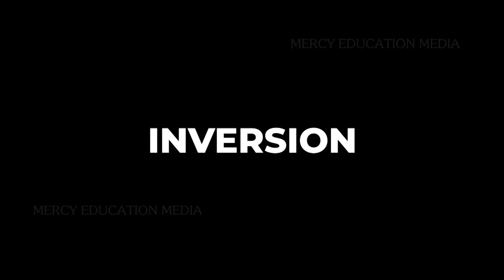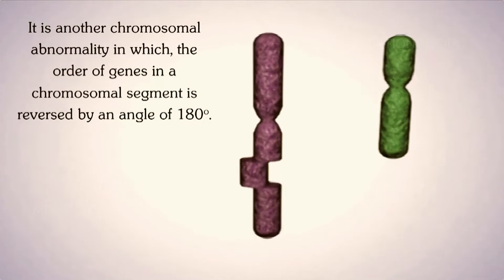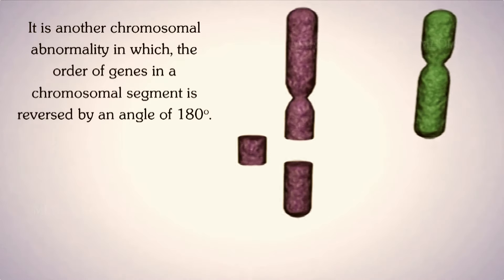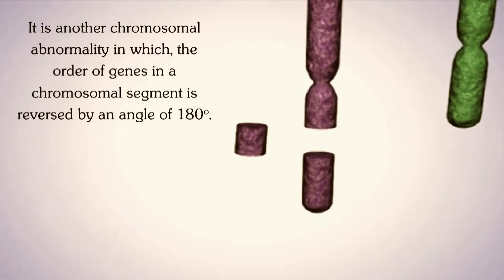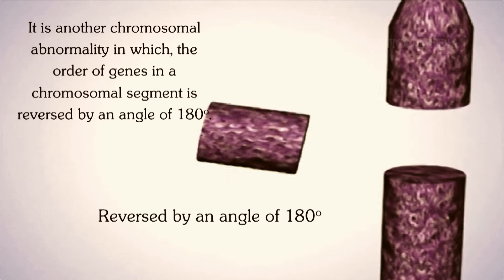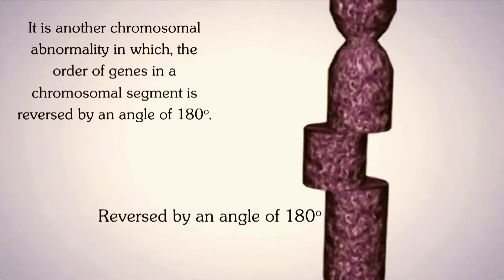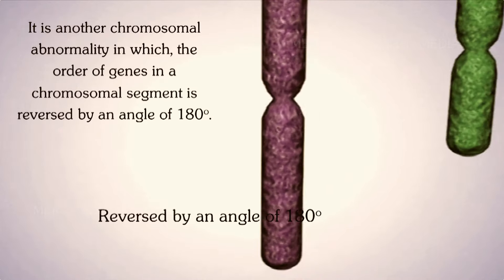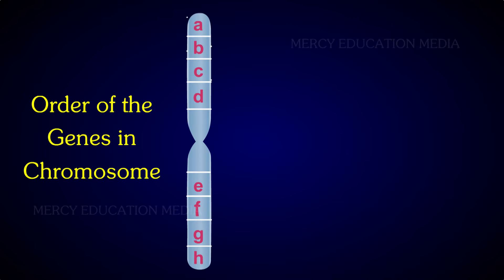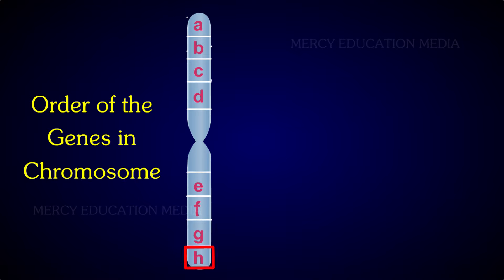Now let us see about inversion. It is another chromosomal abnormality in which the order of the genes in a chromosomal segment is reversed by an angle of 180 degrees. For example, the order of genes in a chromosome is A, B, C, T, E, F, G, and H.